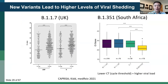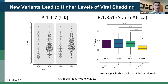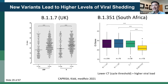Why might B117 and these other variants be more transmissible? I'm showing two studies — one from the UK and one from South Africa — both showing that new variants lead to higher levels of viral shedding. The y-axis shows CT values; lower CT values mean higher viral load. The B117-infected patients (S gene target failures) had lower CT values, representing higher levels of viral shedding at diagnosis. Similarly, B1351-infected individuals in South Africa also showed higher levels of viral shedding. So individuals infected with the new variants appear to have higher levels of viral shedding.